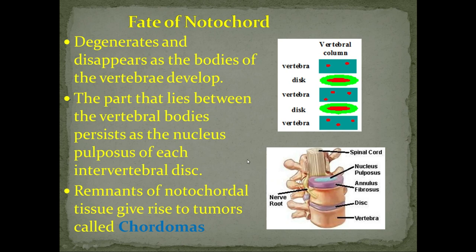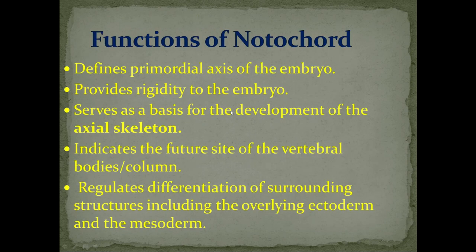The functions of the notochord are: it defines the primordial axis of the embryo, gives rigidity to the embryo, serves as a basis for the development of the axial skeleton, indicates the future site of the vertebral bodies or column, and regulates differentiation of surrounding structures including the overlying ectoderm and mesoderm. I hope notochord formation is clear.